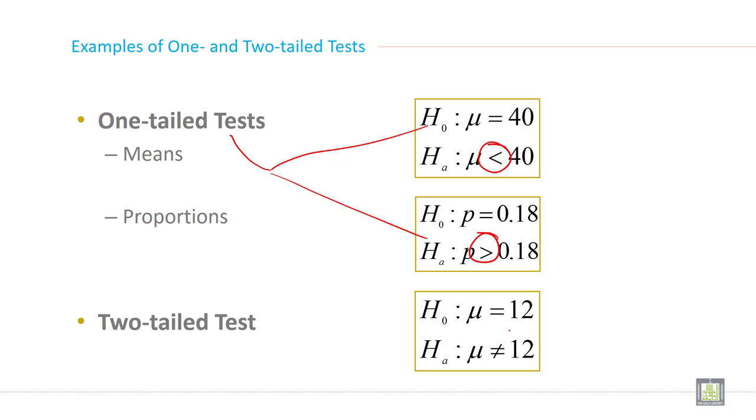When you have a not equal sign, if your alternative hypothesis contains a not equal sign, then it is called a two-tailed test always. Not equal means two-tailed. Less than and greater than means it is a one-tailed test.